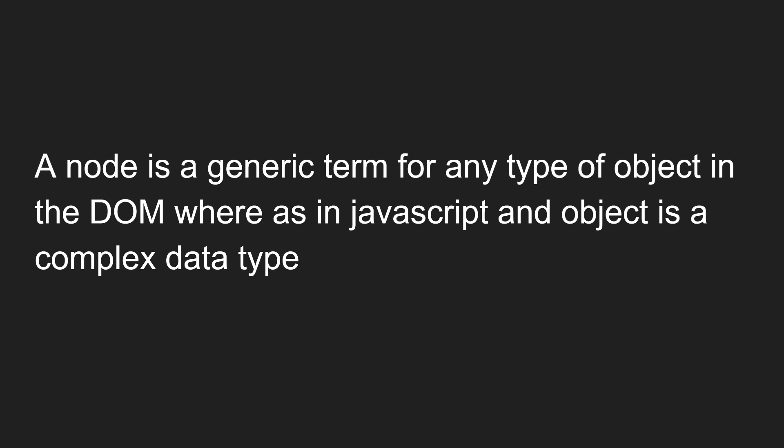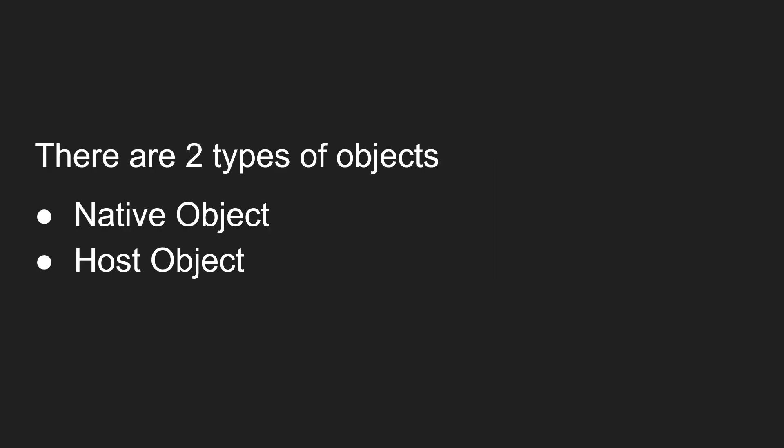We are comparing a node and a JavaScript object. In the DOM, everything is called a node — a node is also a type of object, but we use the term node in DOM context. In JavaScript terminology, we call it an object, which is a complex data type. So there are two types of objects in JavaScript: native objects and host objects.